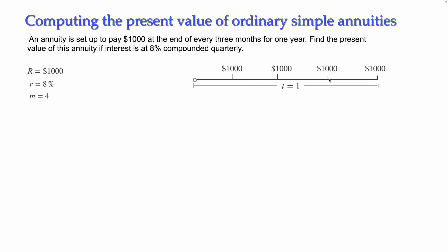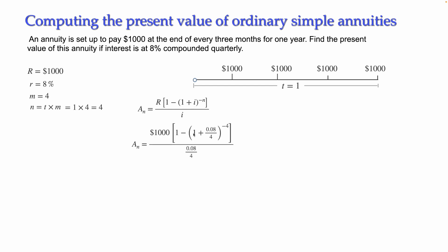This is a simple annuity since payment periods and compounding periods are the same. N equals 4 — we can count one, two, three, four payments in one year. Using the formula, the present value equals the payment multiplied by [1 − (1 + i)^(−n)] divided by i. Substituting: 1,000 times [1 − (1 + 0.08/4)^(−4)] divided by (0.08/4).